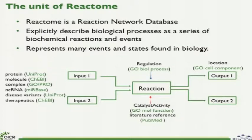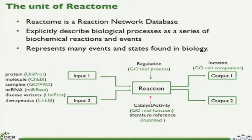The unit of Reactome is the reaction itself. We like to think of ourselves as a reaction network database, much like Panther, KEGG, and BioSig. We can explicitly describe biological processes as biochemical reactions and events. Up until about two years ago, we were primarily describing proteins, macromolecular complexes, and small molecules. As our molecular understanding of disease increased, we expanded our data model to capture information about non-coding RNAs, disease variants, and therapeutics.